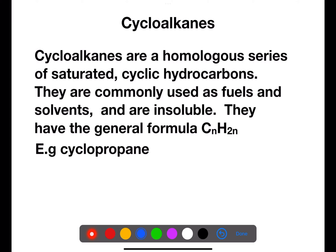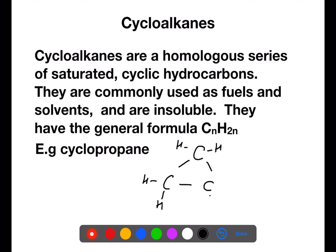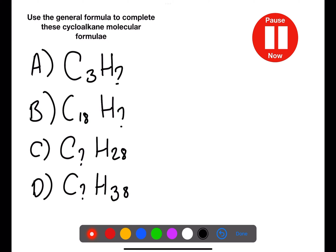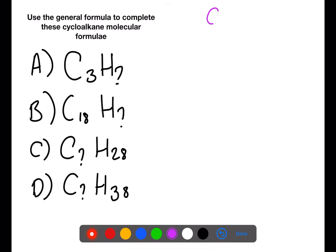The last family are the cycloalkanes. They're a homologous series of saturated cyclic hydrocarbons. They're commonly used as fuels and solvents and are insoluble in water. They also have the general formula CnH2n. Here we can see cyclopropane with the formula C3H6 — the carbons are joined in a ring. Pause the video now and use this general formula to complete the cycloalkane molecular formulae.